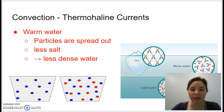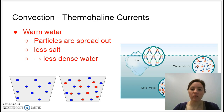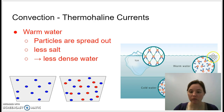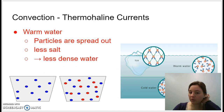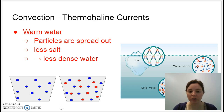Let's start by talking about convection currents, or the thermohaline currents. Warm water particles are more spread out because they're moving more, so we have fewer particles per volume of water. In warm salt water there is less salt because it's a little bit more spread out, and also because of dilution that occurs in warm water. This leads to warm water being less dense.